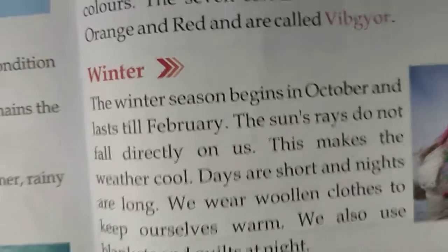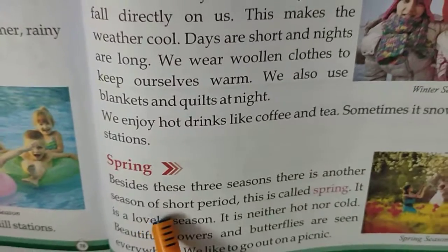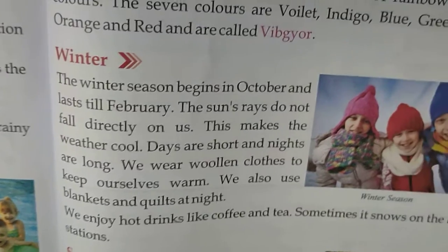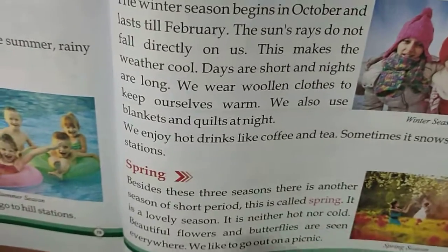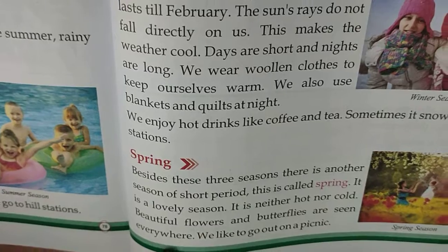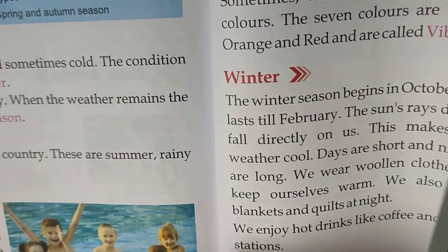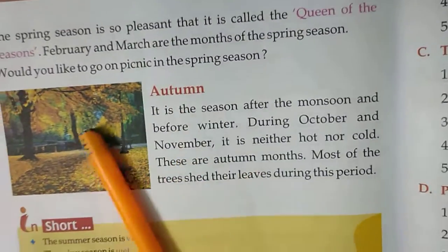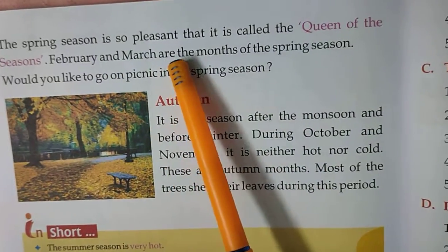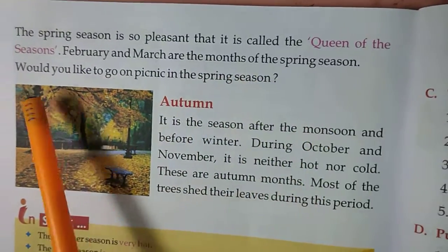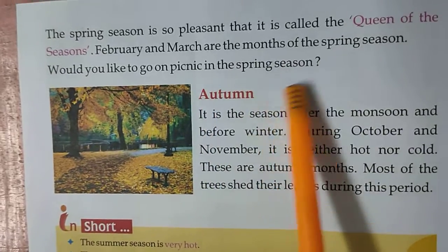Spring: Besides these three seasons, there is another season of a short period called spring. It is a lovely season — neither hot nor cold. Beautiful flowers and butterflies are seen everywhere. We like to go out on a picnic. The spring season is so pleasant that it is called the queen of the seasons. February and March are the months of spring season.